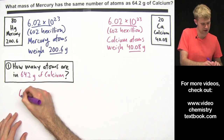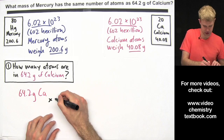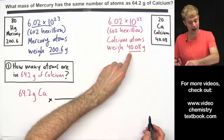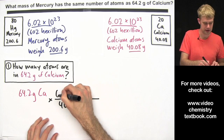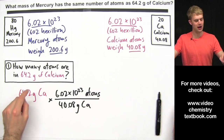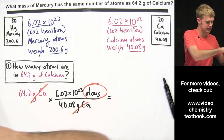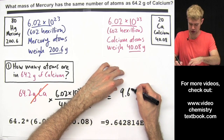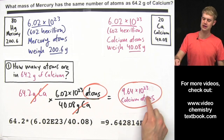Let's start with part one. I'll start with 64.2 grams of calcium and multiply by a conversion factor from the molar mass information. I want to get rid of grams, so I'll put 40.08 grams of calcium on the bottom and 6.02 times 10 to the 23rd atoms on top. Grams of calcium cancel out, leaving me with atoms of calcium. Putting this into the calculator and rounding to three significant figures gives 9.64 times 10 to the 23rd calcium atoms.